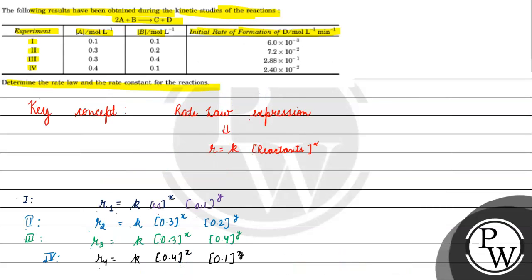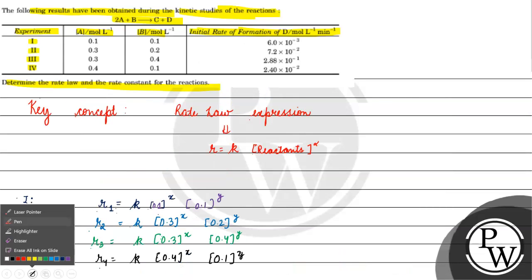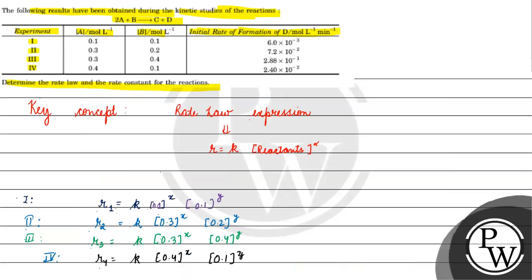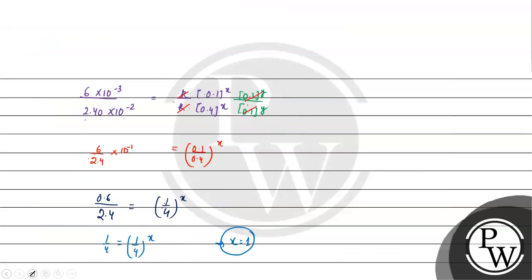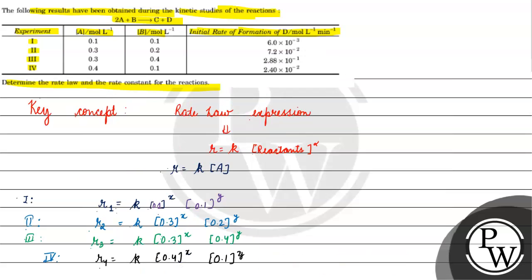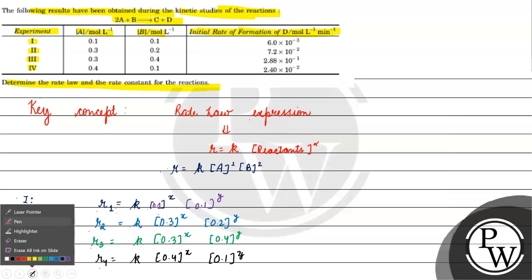The final rate law expression is: R is equals to K into [A] raised to power 1 into [B] raised to power 2.